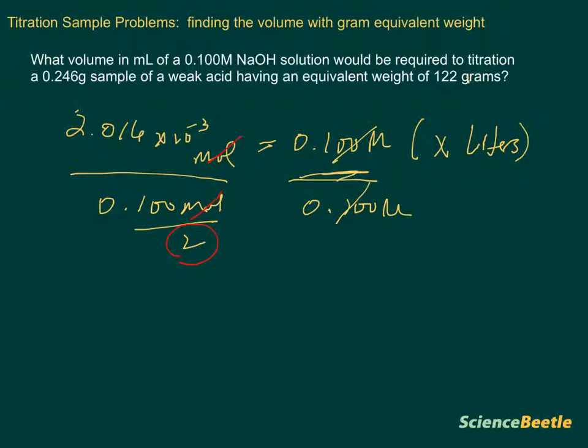Our final solution on the left-hand side: we take that 2.016 times 10 to the negative 3 divided by 0.100. That is going to give us 0.02016 liters. But keep in mind that this volume is in liters.